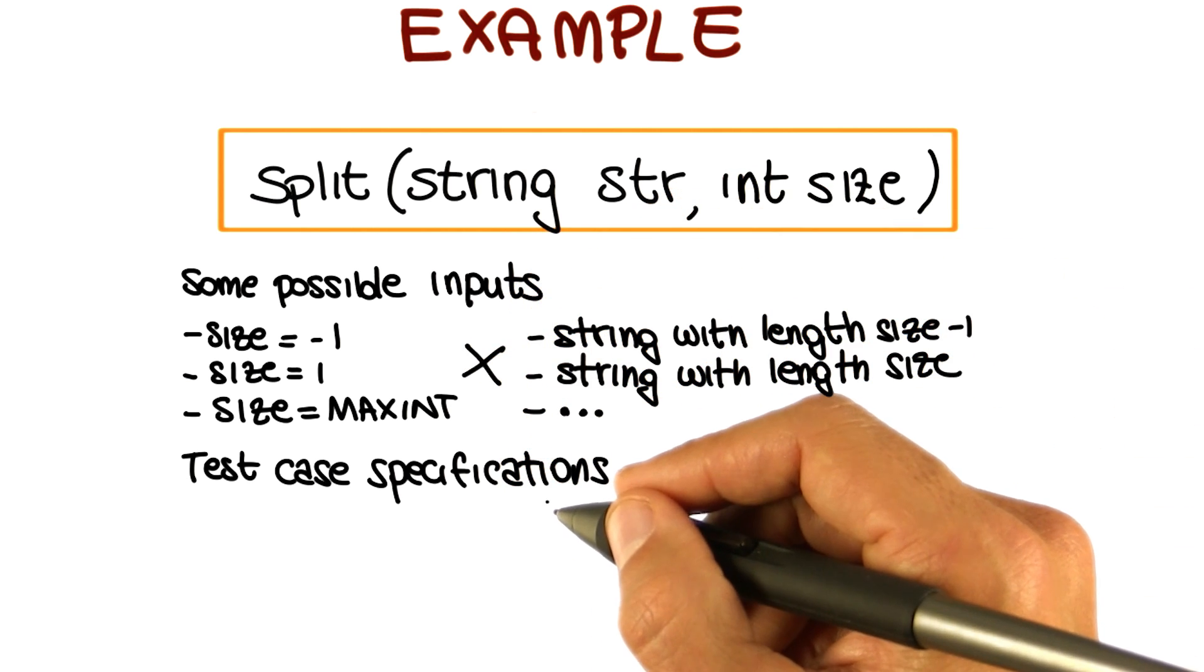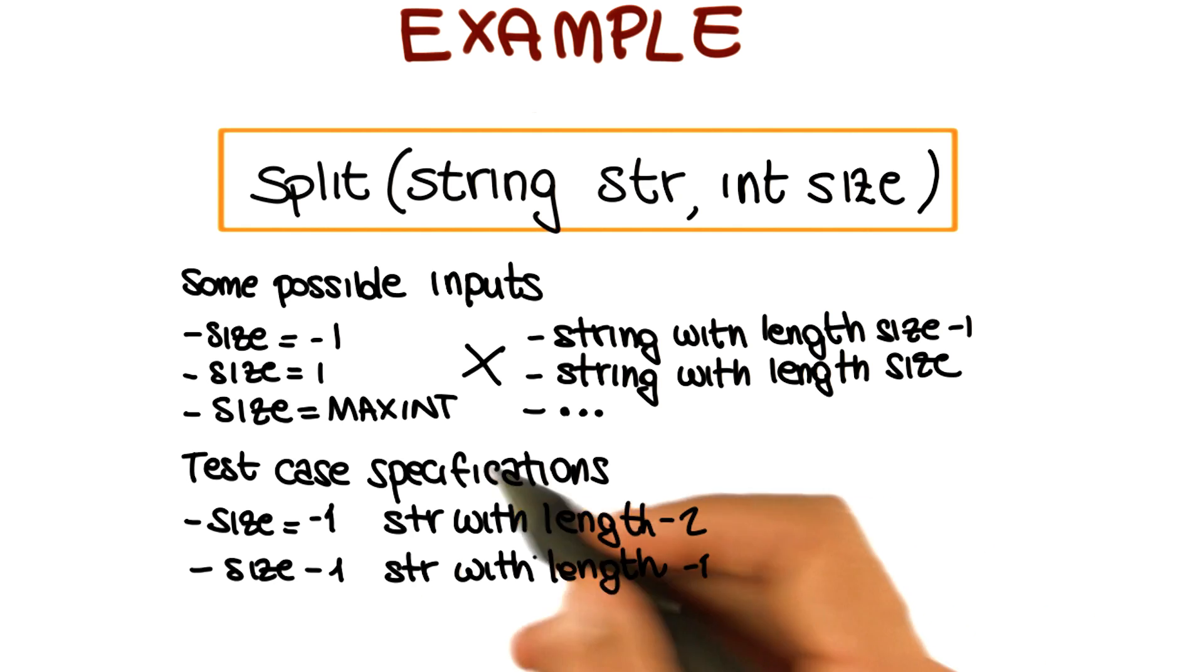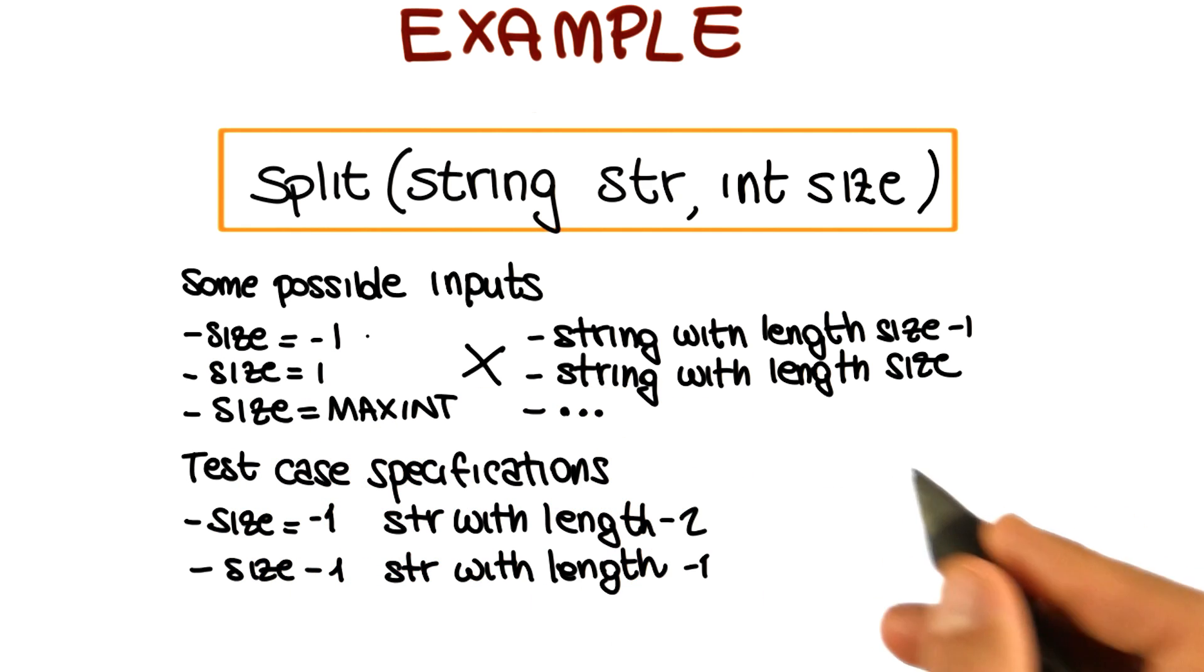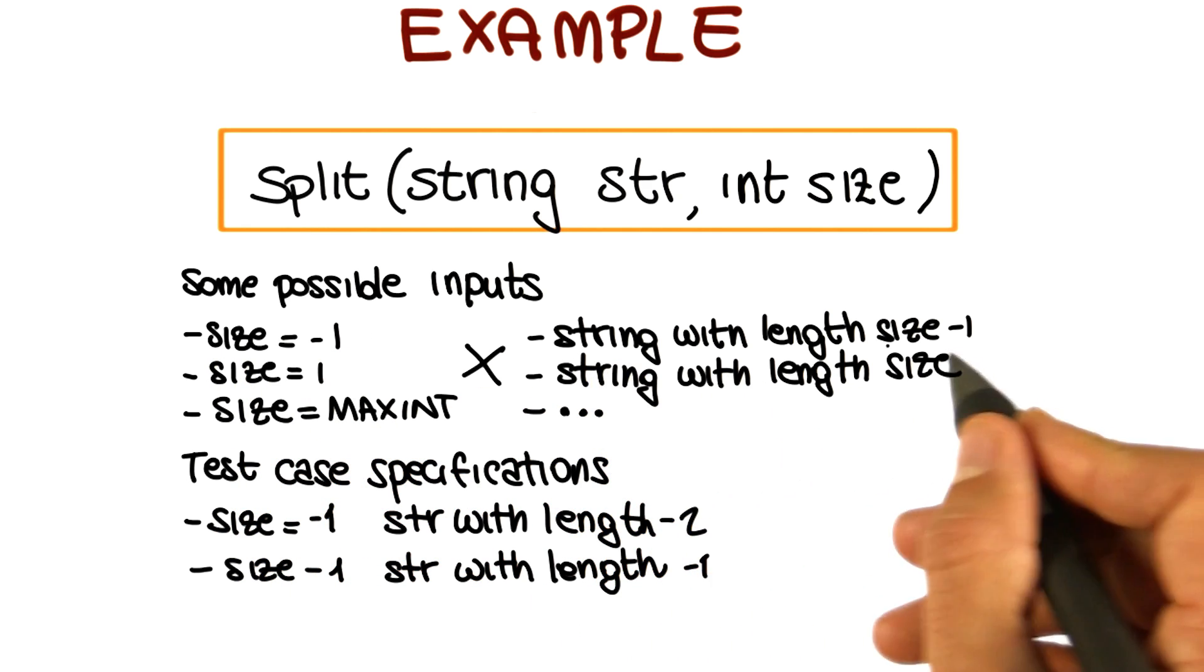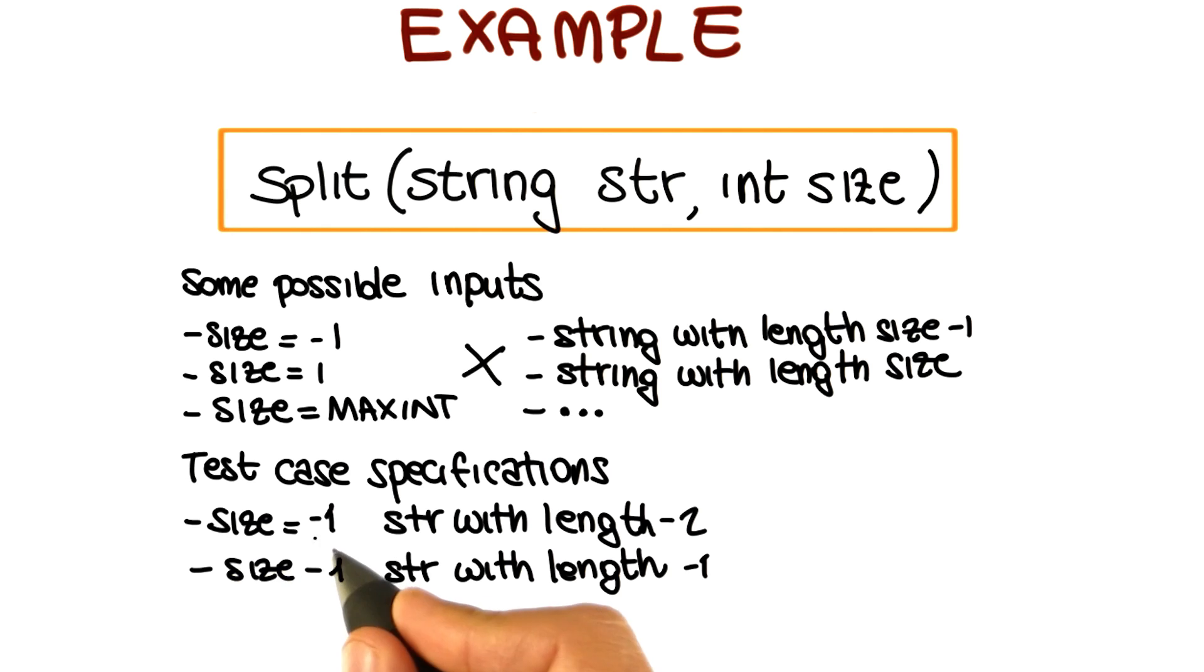So if we do that, what we will obtain is, for example, if we consider the first possible input, size is equal to minus one, we can combine it with these two possible inputs for string and we will get size is equal to minus one, string with length minus two. Or size is equal to minus one, string with length minus one. And we'll go back in a second to see what this means.